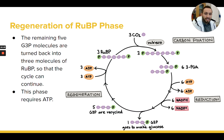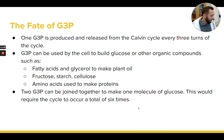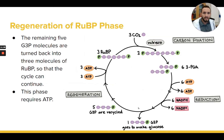That one G3P that gets to leave every three cycles is going to go to the plant cell, which will then use it to build other organic molecules. Most commonly, it's going to use it to build glucose. Before wrapping up, there are a couple more things to point out.